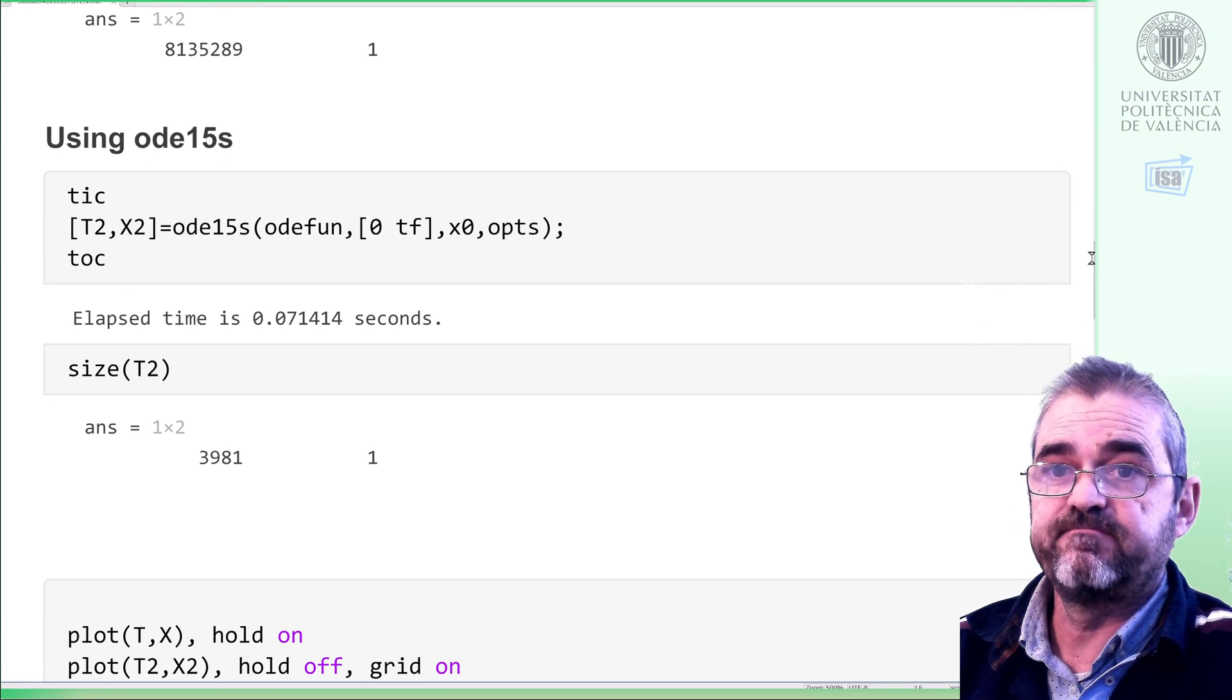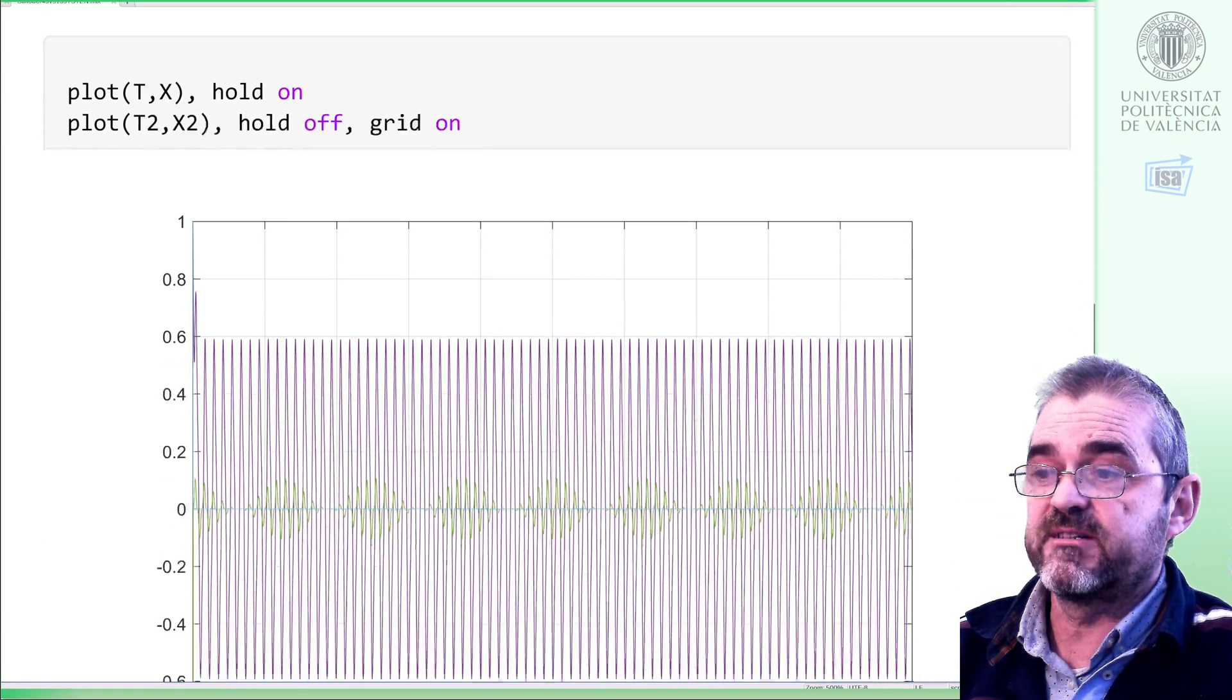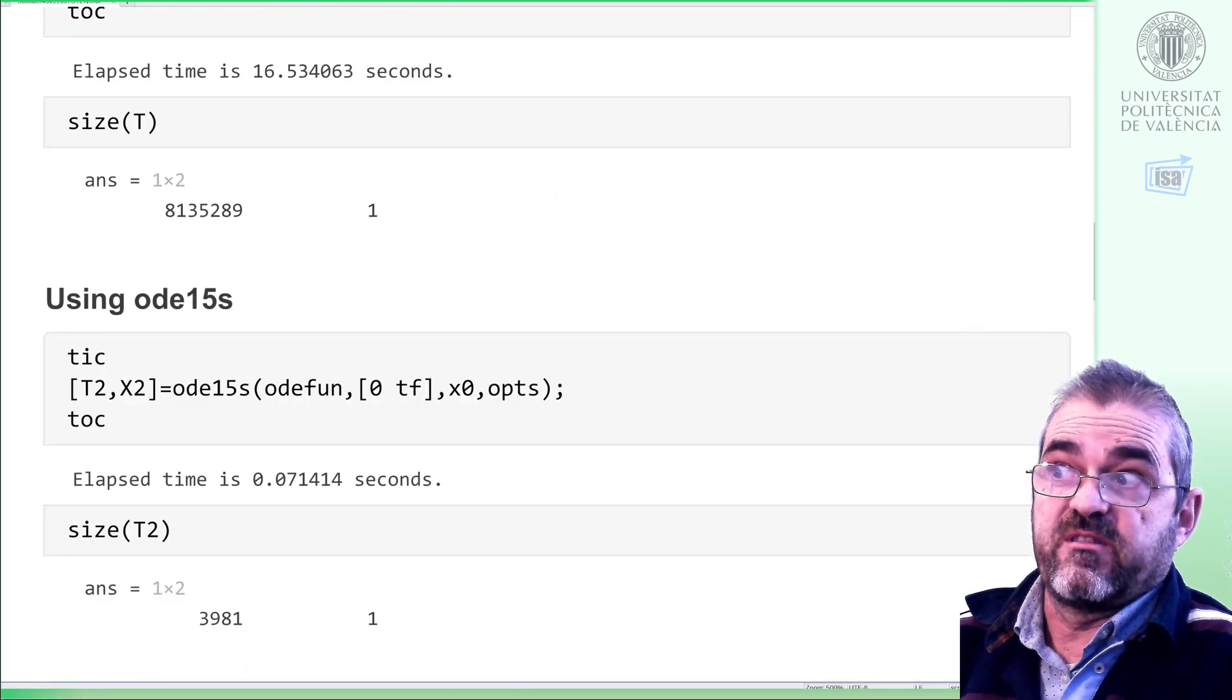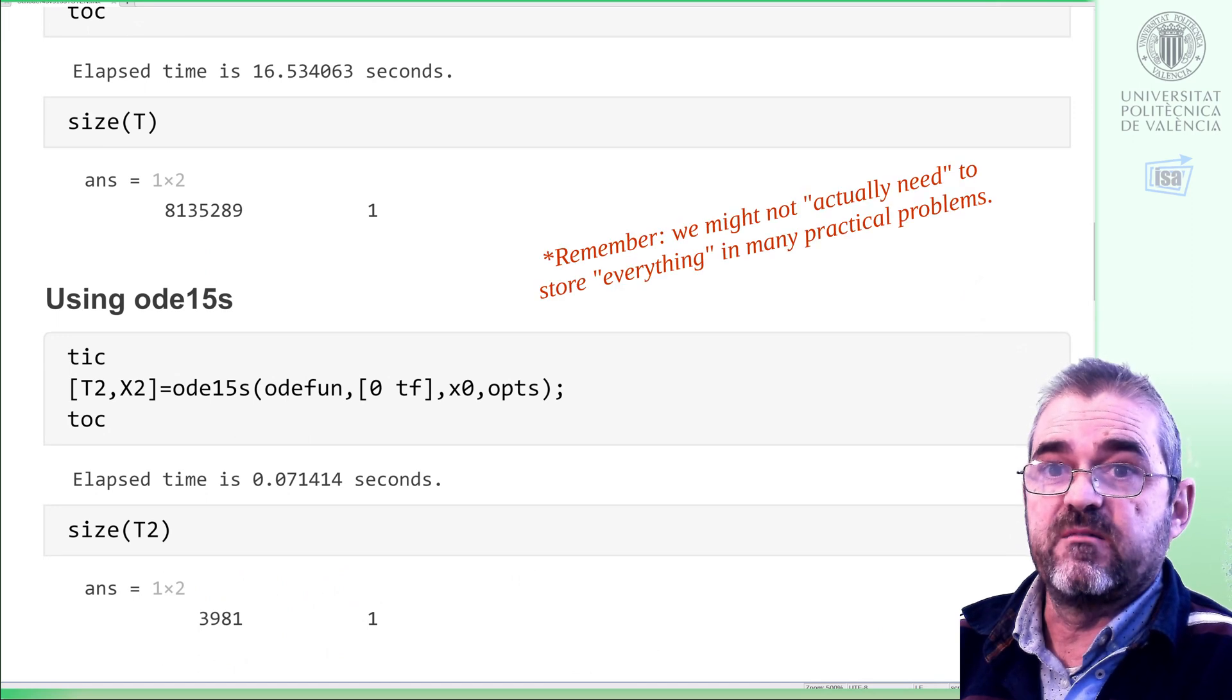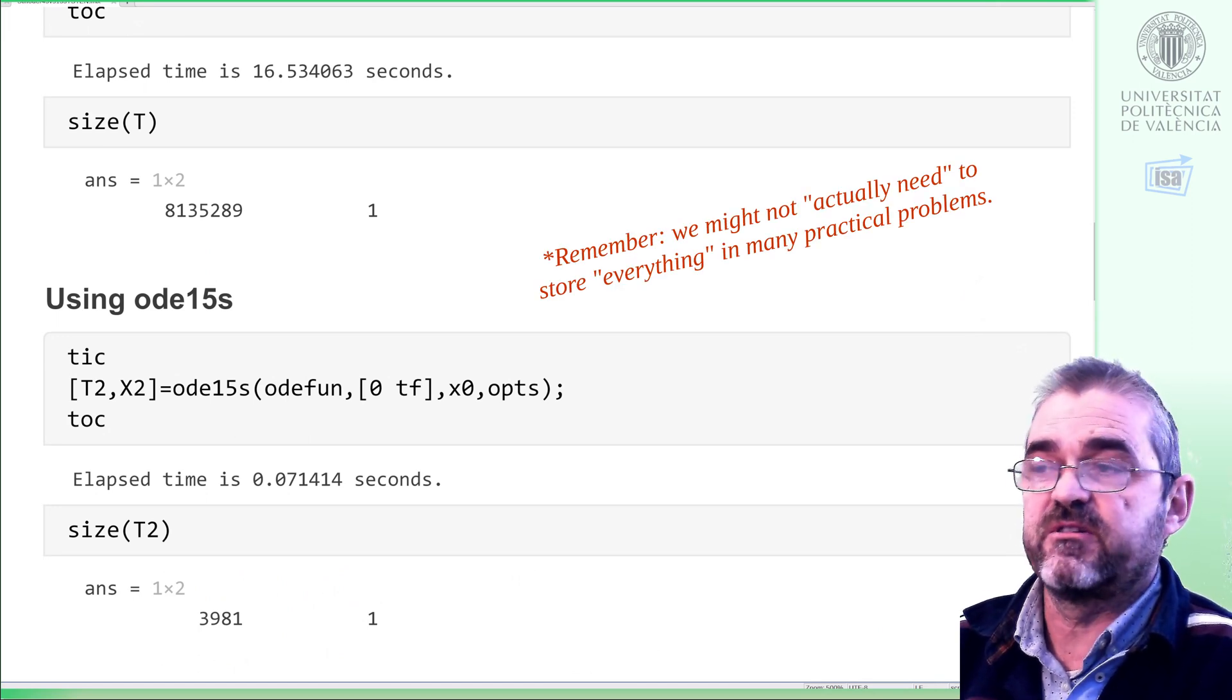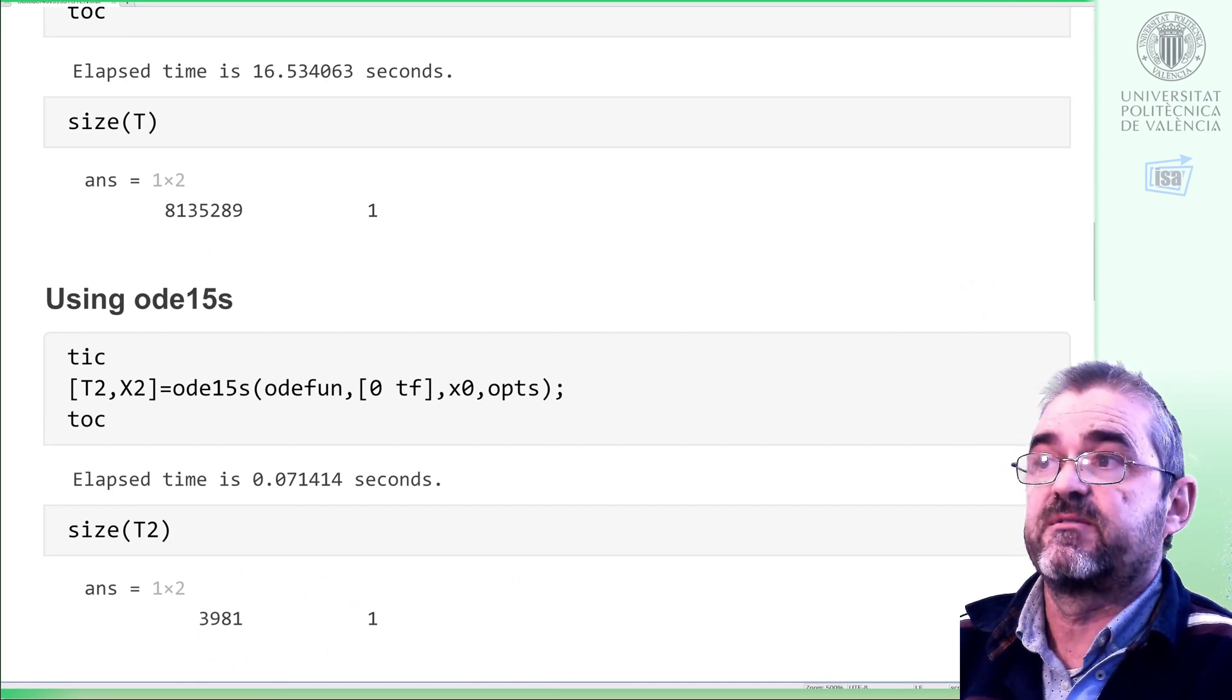Of course, as we take as many points as we need to fulfill the tolerances, simulations are identical. But with the wrong solver, we need about 2000 times more memory to store the simulation result, and we also take 200 times longer.